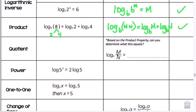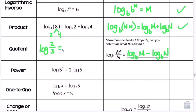The quotient property follows from the product property. For multiplication we used addition, so for division we use subtraction: log base b of (m divided by n) equals log base b of m minus log base b of n. For example, log of (2 divided by 3) can be rewritten as log 2 minus log 3. When there's no base shown, we know it's base 10.